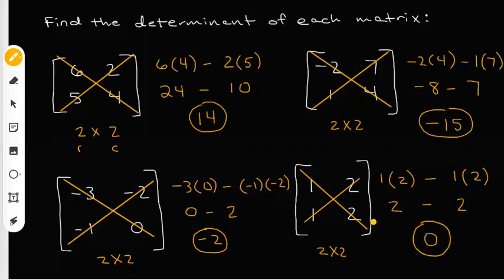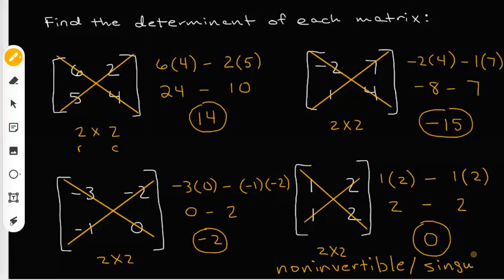When your determinant is zero, that means you cannot invert this matrix, so we call this matrix non-invertible. That means you can't make an inverse of this matrix. We also call that singular, which basically means the same thing as non-invertible.